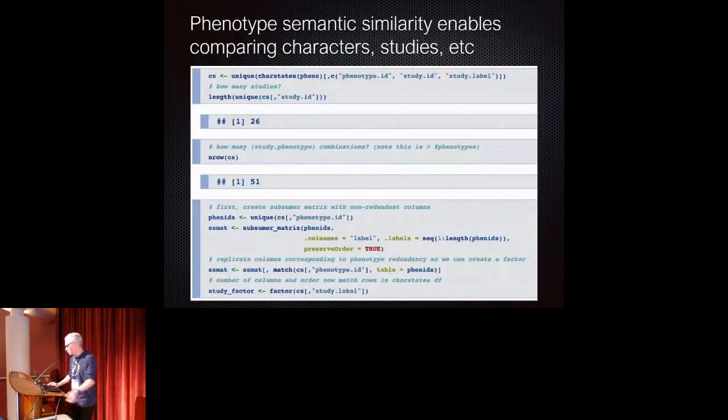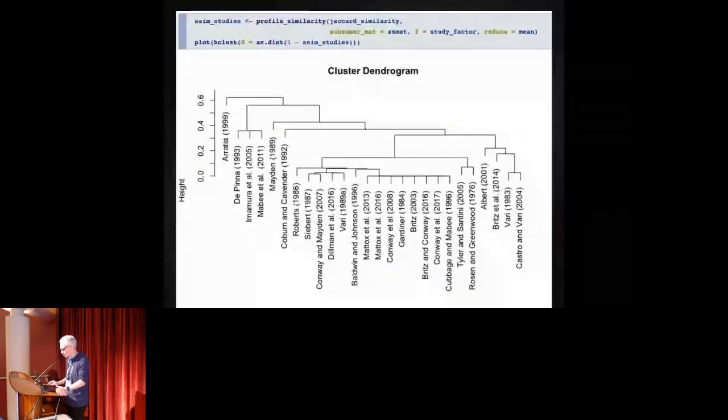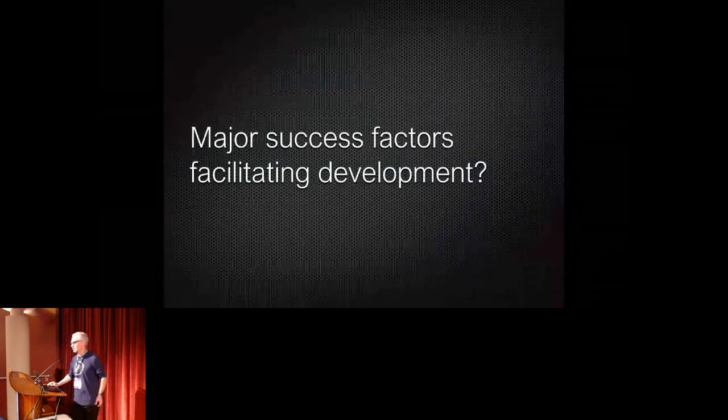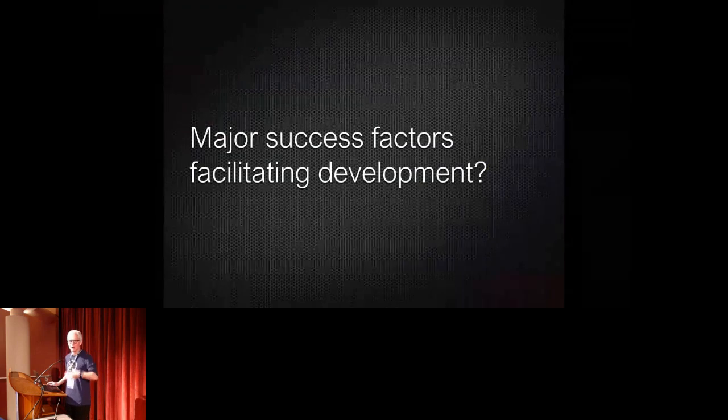We can then also use the phenotype semantic similarity to compute something like semantic information content across characters or even across studies and compare them from a semantic standpoint. So here I'm doing this for studies, all the studies that have phenotypes about the basihyal bone and have used just those to compare semantic similarity profiles for each study. You know, some studies align with each other much more closely than others.